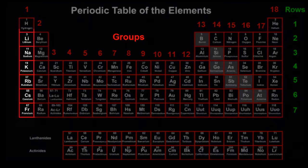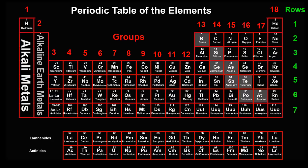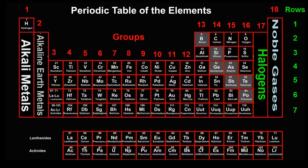For example, all of group 1 elements, except hydrogen, are soft, malleable metals that explode when you put them into water. Some groups even have family names. Group 1 elements are called the alkali metals. Group 2 elements are the alkaline earth metals. Group 17 are the halogens, and group 18 are the noble gases.